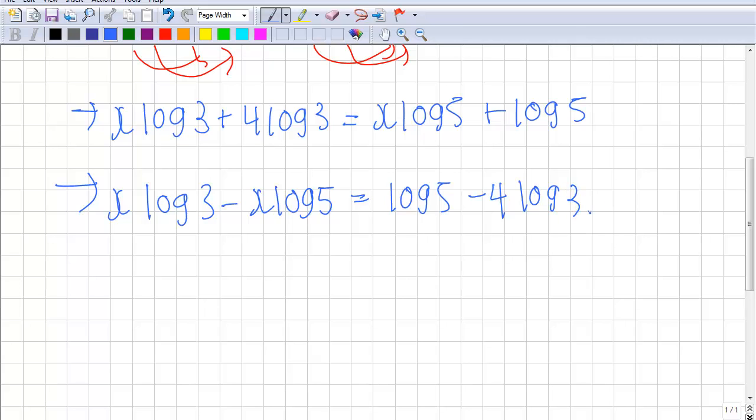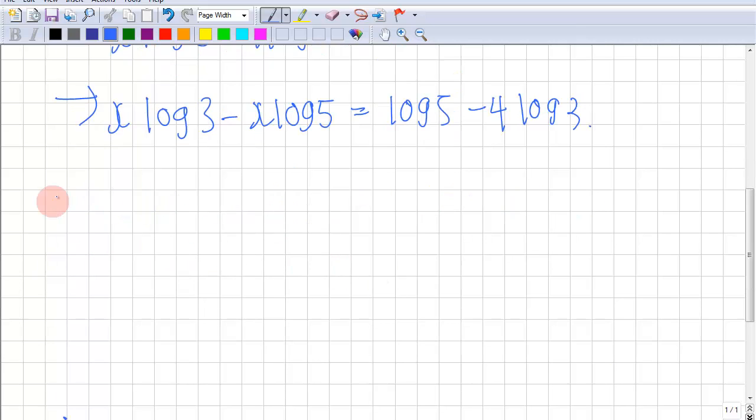Now we want to isolate the x variable. Then we can write x times log 3 minus log 5 equal to log 5 minus 4 log 3. And now we want to isolate x.